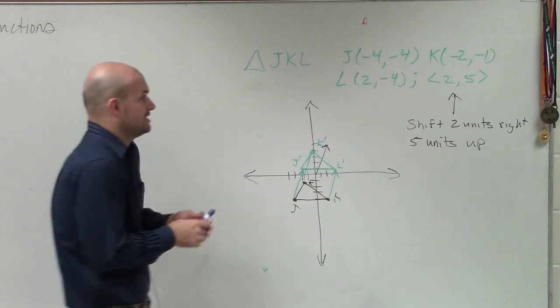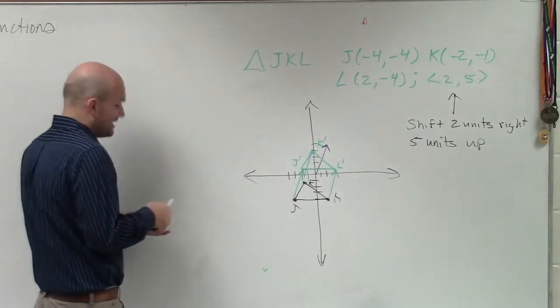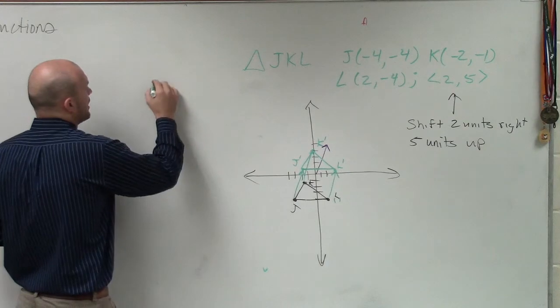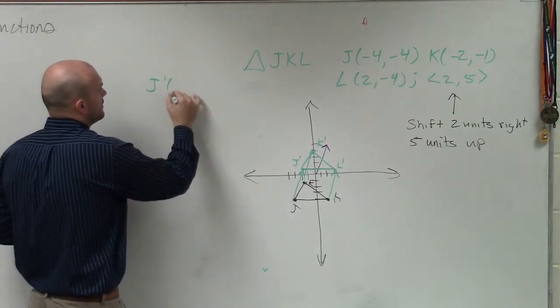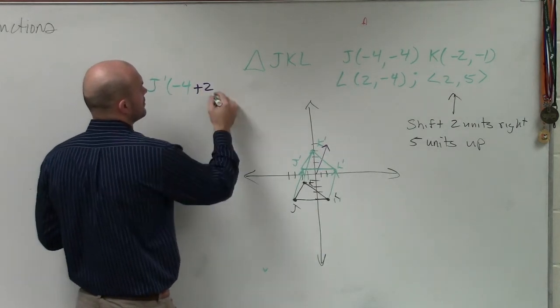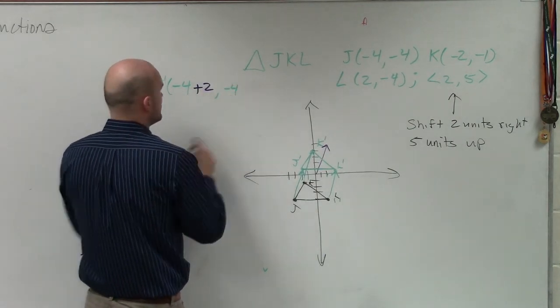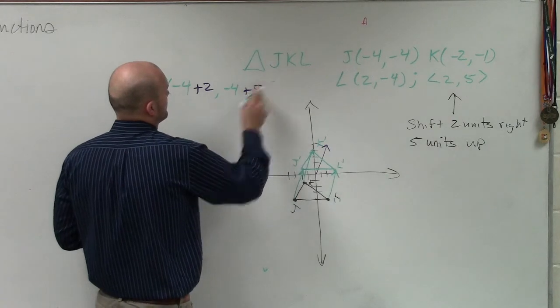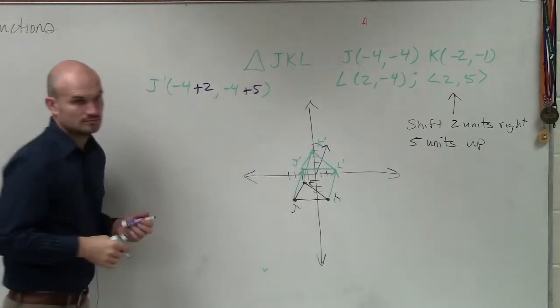Yeah, you could also just take a look at this and say, you could also just add to each one and say, all right, well, J prime then is negative 4 plus 2, comma, negative 4 plus 5, right? And then you could say, well, J prime then is equal to negative 2, positive 1.